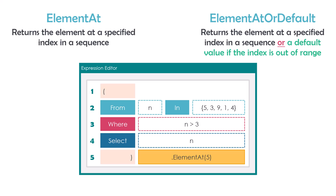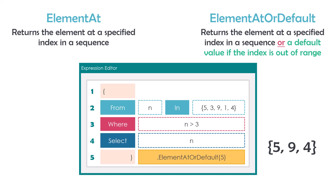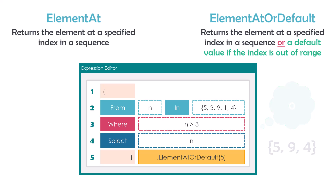The default value always depends on the data type we have in the collection. For example, in a query with a collection of integer numbers, the default value for integer is 0. So if I use ElementAt or default with index 5, I will get 0 as the result because I don't have index 5. Therefore I get the default value, and no exception is thrown.